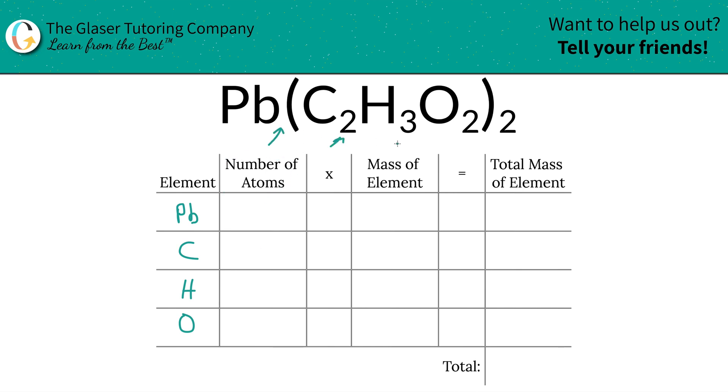Now, if you don't see a subscript at the bottom of a particular element, just put in a one. So there's only one lead in the compound. That's because that's what its subscript is, and there is no parentheses outside of it to multiply by. Next, we take a look at the carbon.